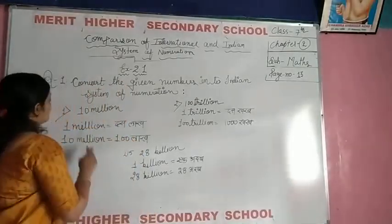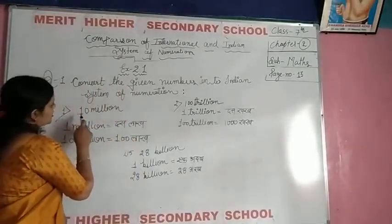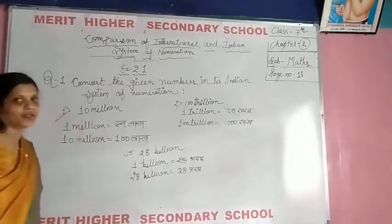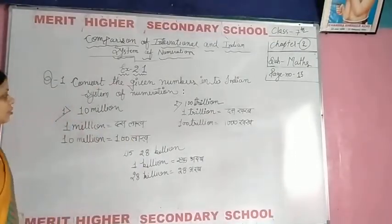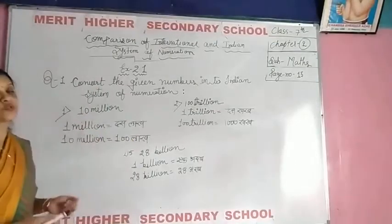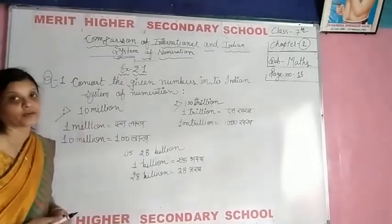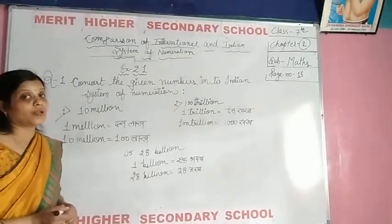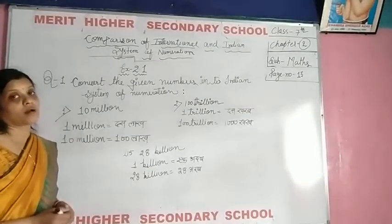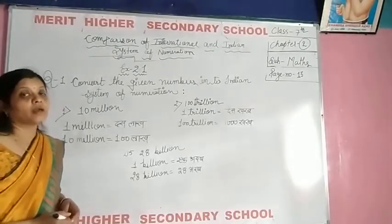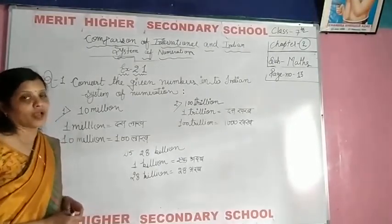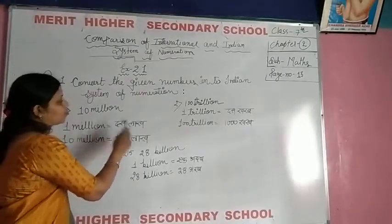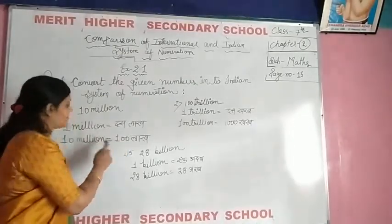Now, the first question is 10 million. So what is given? It is 10 million. So first we convert into Indian system. We have to count — 1 million, so in 1 million, 1 million equals 10 lakh.